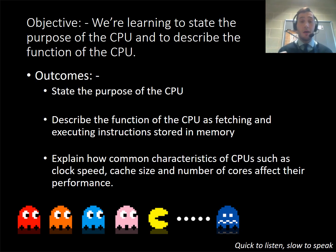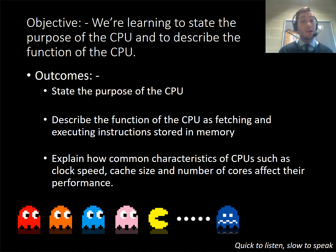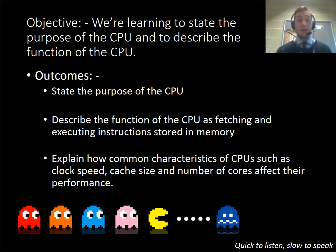The objective of this is that I want you to understand the state and the purpose of the CPU. I want you to describe how the process works of something called the fetch, decode and execute cycle, and I want you to think about some of the characteristics of the CPU — such as the clock speed, cache, and the number of cores — that affect performance. That's what I want you to get out of this video, so take regular breaks and I hope it helps you with your studies.